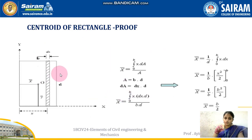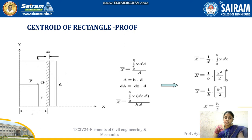From the derivation we found y-bar equals D/2. By symmetry, x-bar equals B/2. But we cannot say this for all figures — that is why we use integration derivation methods. The next proof for the rectangle will consider a vertical rectangular strip instead of the horizontal strip used earlier.